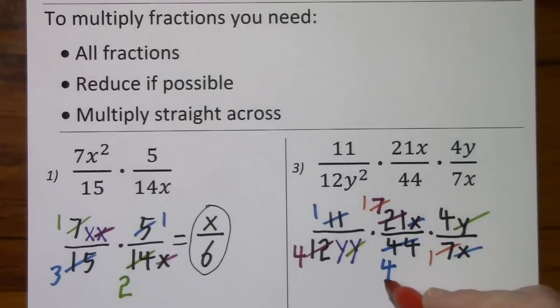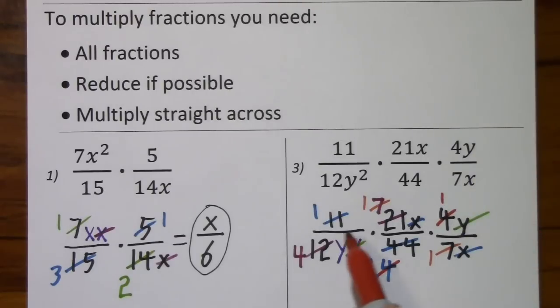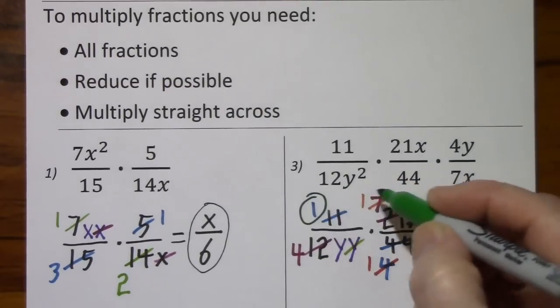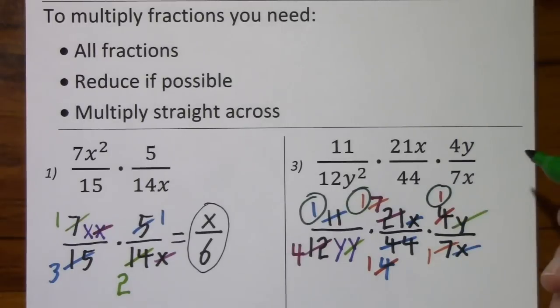And 4 is certainly a common factor of itself. So that would be a 1 and a 1. It's an awful lot to look at here. What's left standing? In the numerator, we've got a 1, a 1, and a 1.